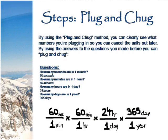The next step is the plug and chug method. By using the plug and chug method, you can clearly see the numbers you are plugging in so you can cancel the units out later. By using the answers to the questions you made before, you can plug and chug. As shown in the example below, we plugged 60 seconds over 1 minute times 60 minutes over an hour. Minutes will eventually cancel out, leaving seconds and hours. At the end, you will be left with seconds over years, which is what you want.